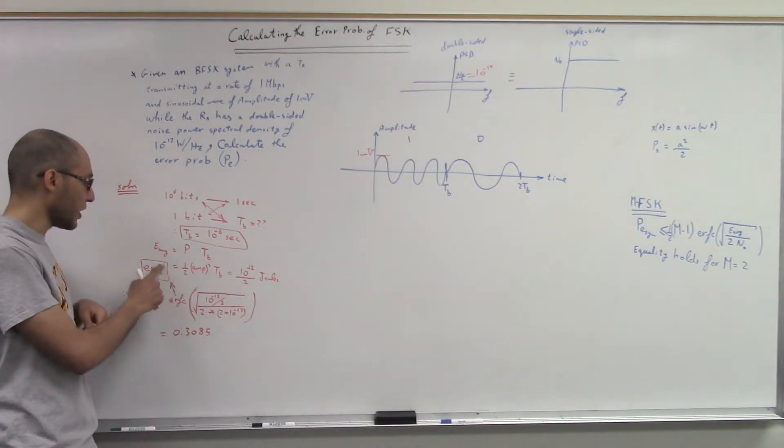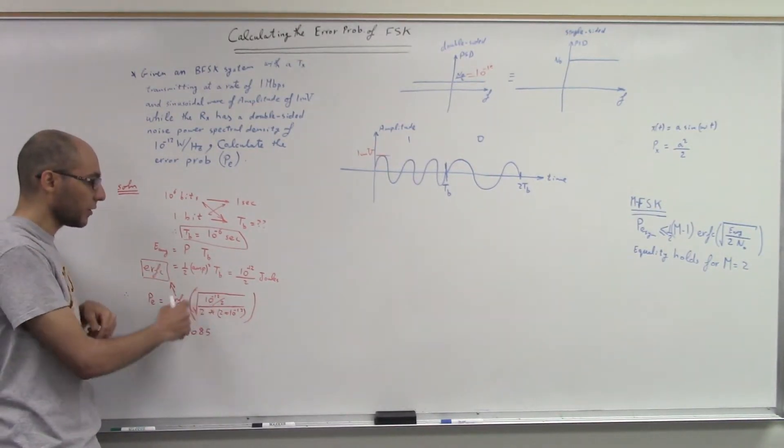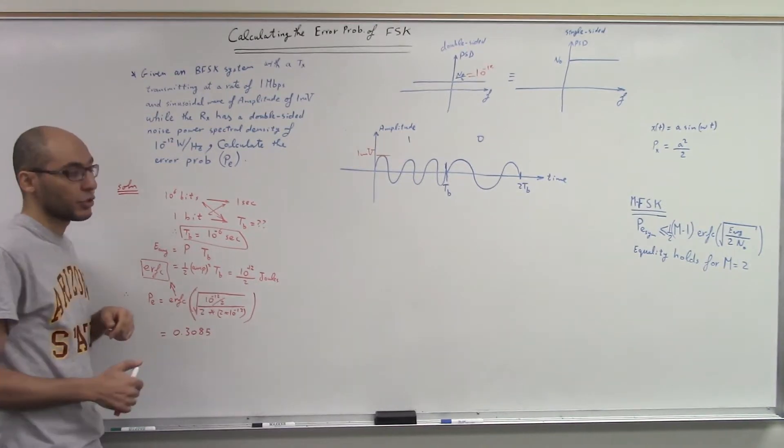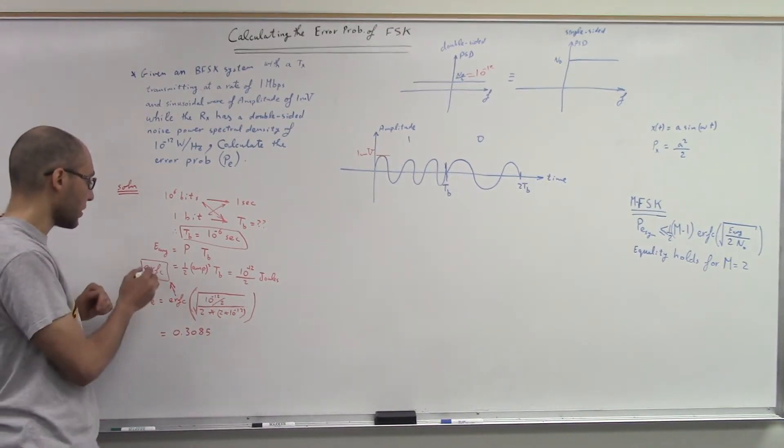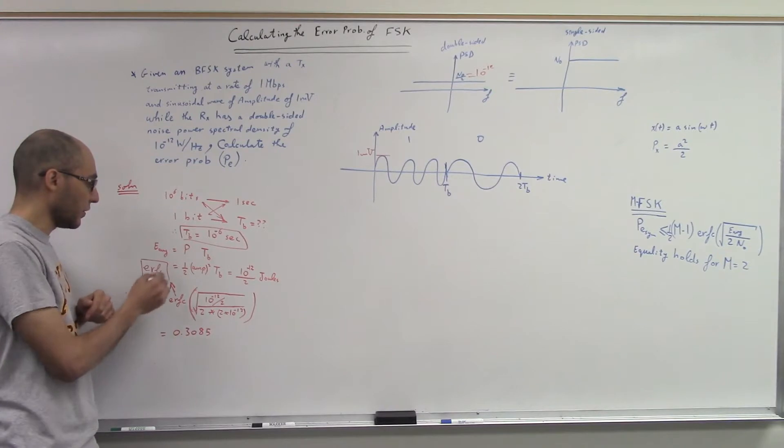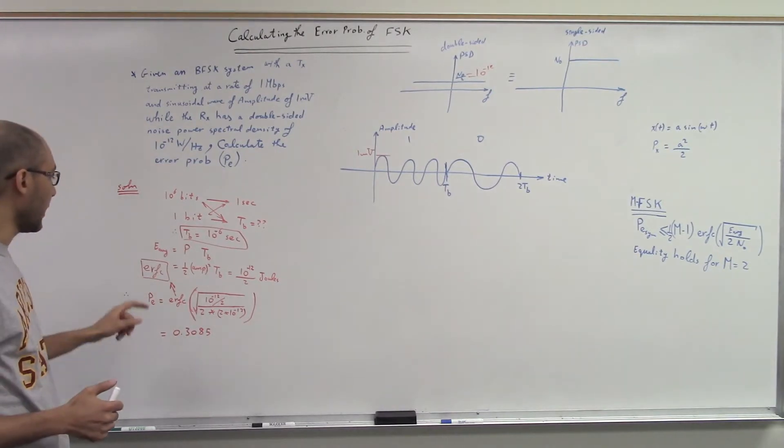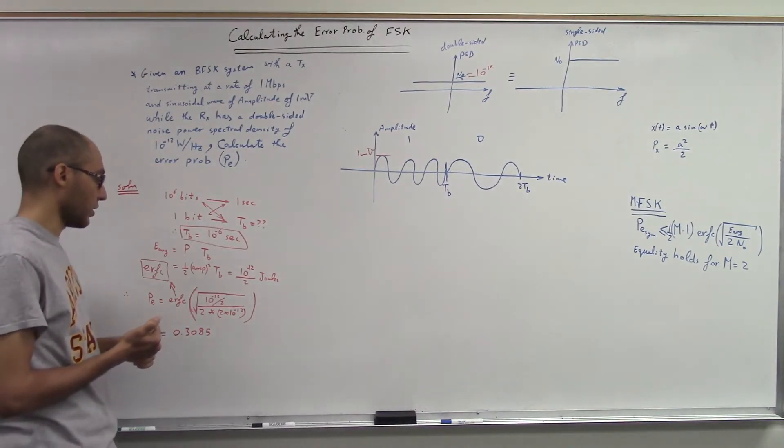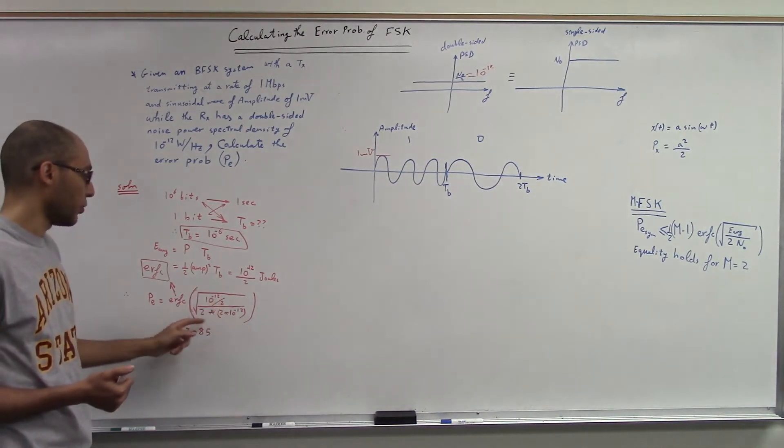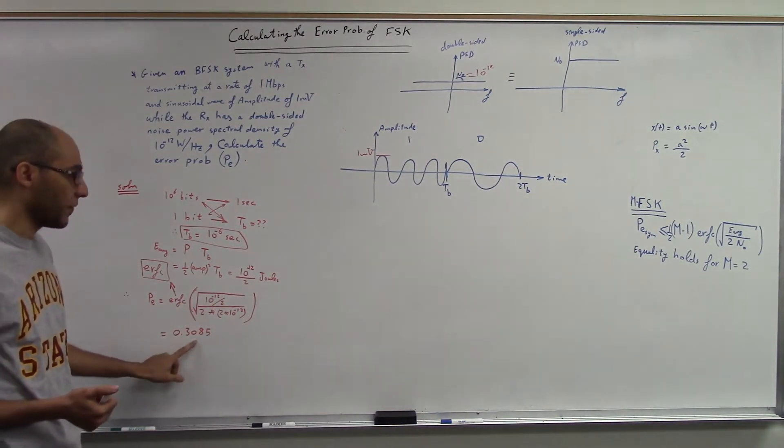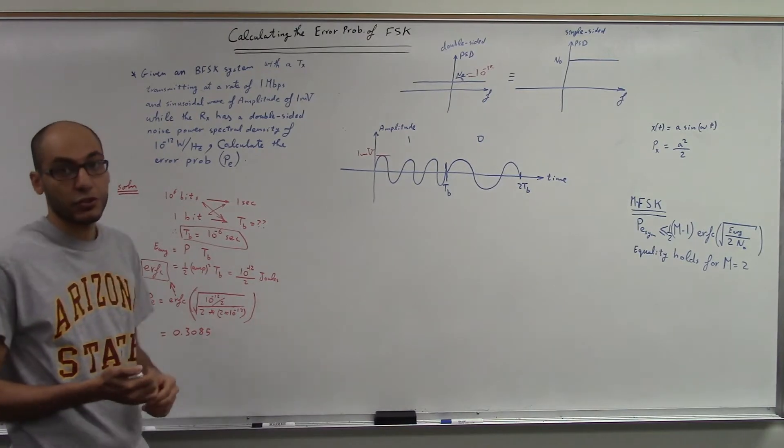So you end up having this number for the average energy, and you could use the error function to calculate the average error probability. So this error function is written this way in MATLAB and in Wolfram Alpha, and you can use it to calculate the average probability of error, and you end up having 30% of average probability of error.